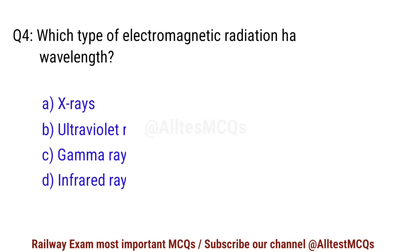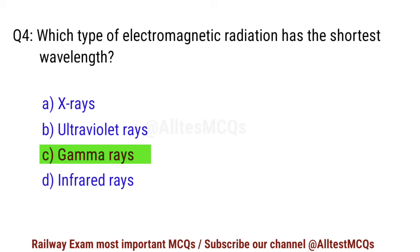Q4. Which type of electromagnetic radiation has the shortest wavelength? Right option is C. Gamma rays.